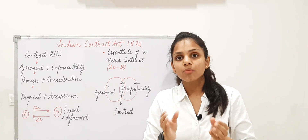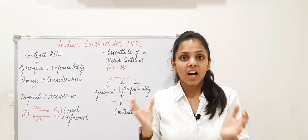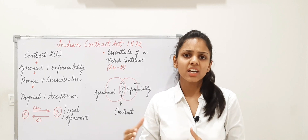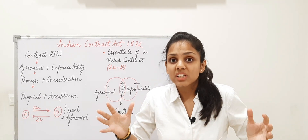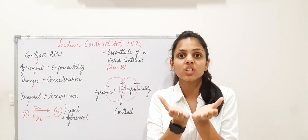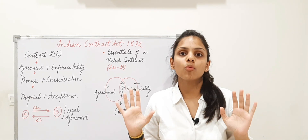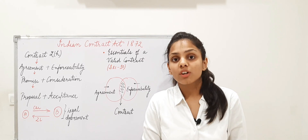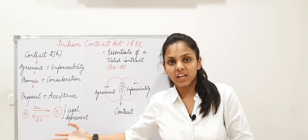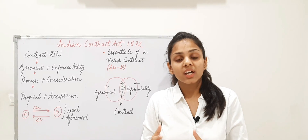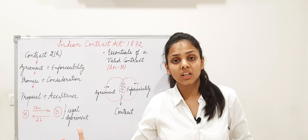Every term — free consent, competent to contract, lawful consideration, lawful object — has its own dedicated chapter, which we will cover in depth. 'Not expressly declared to be void' means there are some agreements the Indian Contract Act specifically declares void under Sections 23 to 30, such as agreement in restraint of marriage or agreement in restraint of trade. These are all void agreements.